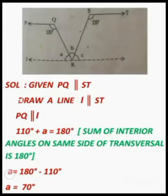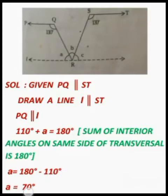Now, 110 plus angle A equals 180 degrees. To find angle A, transpose 110 degrees to the right-hand side: A equals 180 minus 110 degrees. So angle A is equal to 70 degrees.